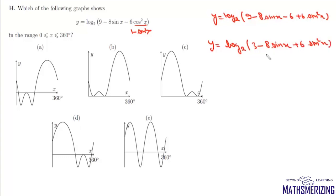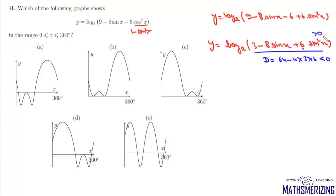This is essentially a quadratic in sinx. If we check its discriminant, it equals 64 - 4×3×6, which is less than 0. Since a > 0 and the discriminant < 0, this expression is always positive, so the function is defined over the entire domain.